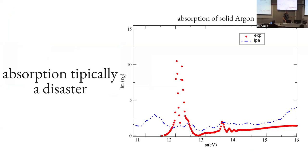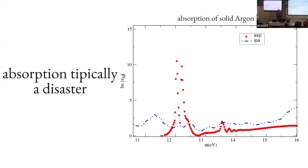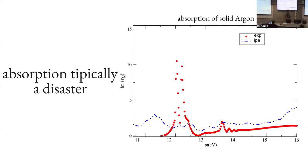Today we are going to see another way using Green's functions. Today will be devoted to the one-particle Green's function. In the first part, we will introduce the concept of Green's function and define the GW approximation. In the second part, with Matteo, we will see the technicalities of doing a GW calculation, because it is far from a black box — you need to know some things.